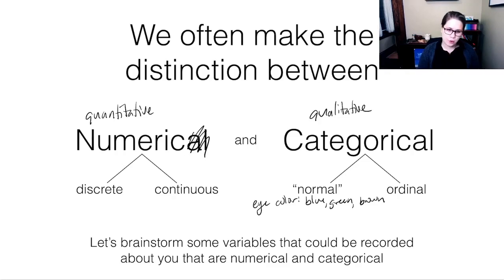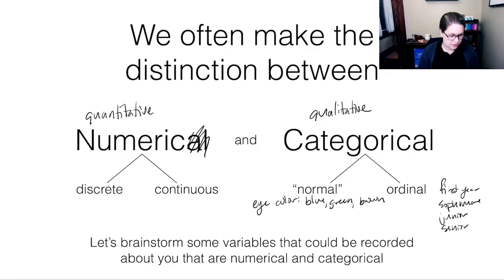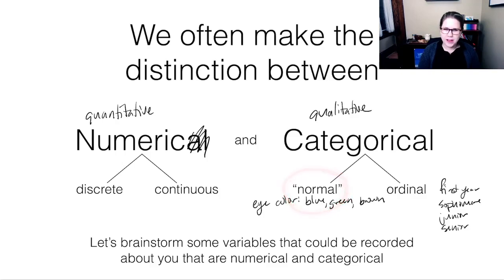We're also going to talk about ordinal categorical variables. That would be something like class year — so you're a first year, then a sophomore, then a junior, and finally a senior. There is a natural ordering to that variable. So I don't have a separate term for what a normal categorical variable is — it's just a categorical variable — but we can be more specific and say an ordinal categorical variable when there's a natural ordering.